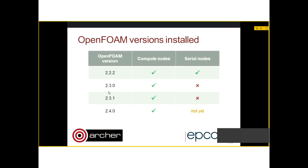What do we have installed on Archer? We have, at the moment, four versions. They're all installed on the compute nodes, and at the moment 2.2.2 is installed on the serial nodes. The latest version, which is 2.4, should be installed on serial nodes in the next few weeks. Adrian Jackson has installed the older versions, and I've installed the latest version. Adrian points out that version 2.2.1 has got a slightly different setup, which I'll come to in the next slide.